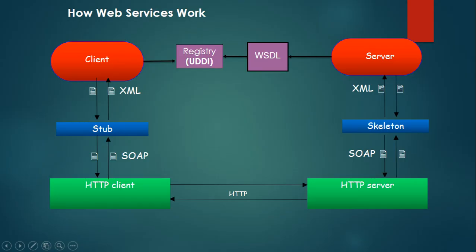The HTTP server sends the SOAP request to the skeleton — a predefined class that depends on the service class. The skeleton invokes the client request from the server application and gets the response, which is a SOAP response in XML document format. This SOAP response is sent back to the client application via the HTTP protocol. At the client side, the SOAP response is read by the stub again, which returns a value to the client application.